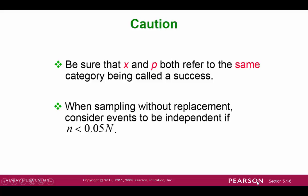A couple of points of caution. Make sure that x and p are associated with a success. Also, when sampling without replacement, we would consider the trials to be independent if the number of trials is smaller than 5% of the population.